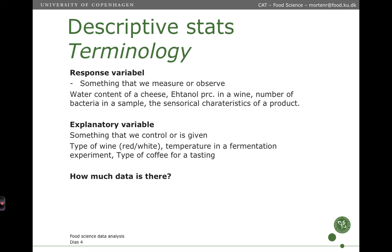Then how much data is there? Univariate refers to that we have one response variable. So that could be a bunch of explanatory variables, but if we only measure one thing, we talk about that we have univariate data. Bivariate is just above univariate, that is where we have two response variables. And then when we have more than two response variables, we talk about multivariate data.